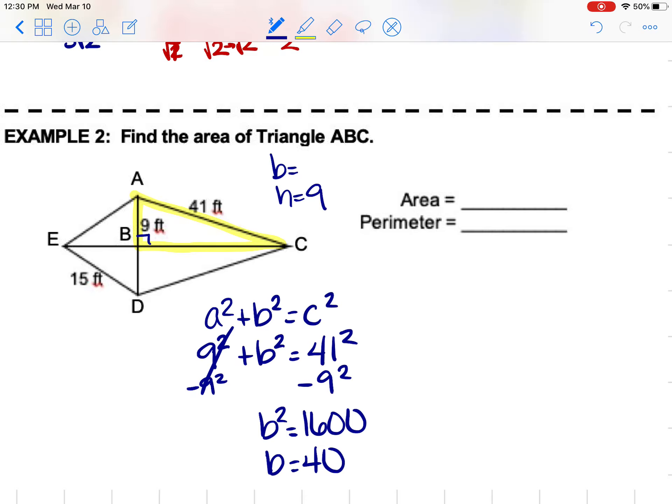And so now we know that this side is 40, which does give us our base up here. Those two Bs are not the same thing. Down here it's for Pythagorean theorem at the bottom, and up at the top it's B for base in our formula.